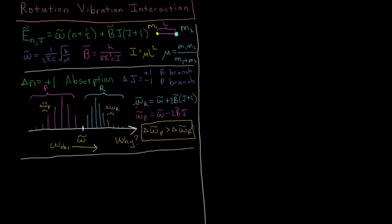And if we look at what the frequencies are, if we subtract the difference between these energy levels of Δn equals plus one and Δj equals either plus one or minus one, we get the vibrational frequency plus 2B̅ times j plus one for the R branch, and the vibrational frequency for the P branch. The photon absorption frequency of the P branch equals the vibrational frequency minus two times the rotational constant B̅ times j.